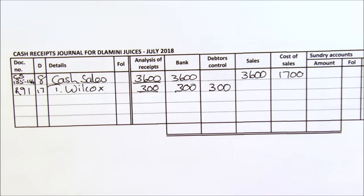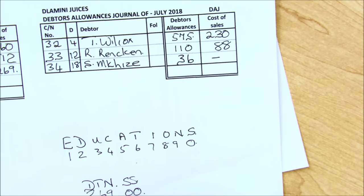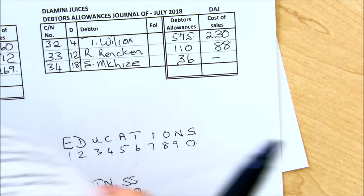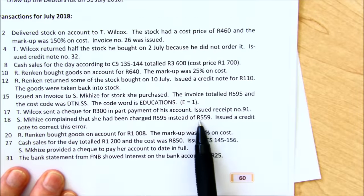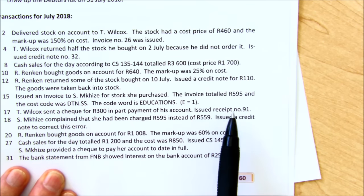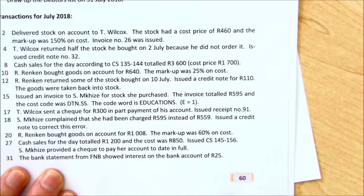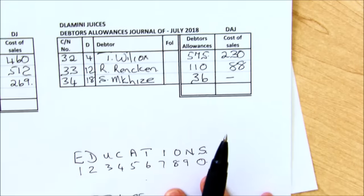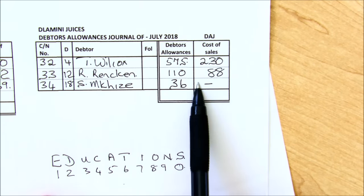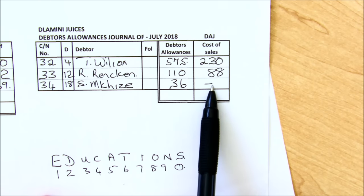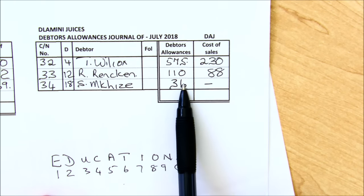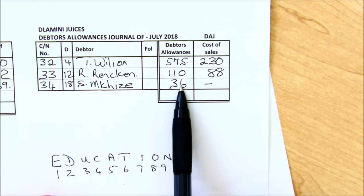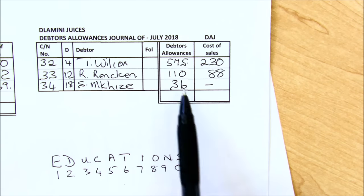Carry on and finish the remaining entries and total up. On the 18th, S. McKees complained that she had been charged 595 instead of 559, so we overcharged her. We issued a credit note to correct this error. Giving her a credit note is giving her a reduction in what she owes — an allowance. So it will go into your debtors allowances journal. But this time there will be no cost of sales. Remember, your double entry for cost of sales was always trading stock — there's no stock being returned. All we did is overcharge her, so we're giving her an allowance, a reduction — only a selling price entry in that case.